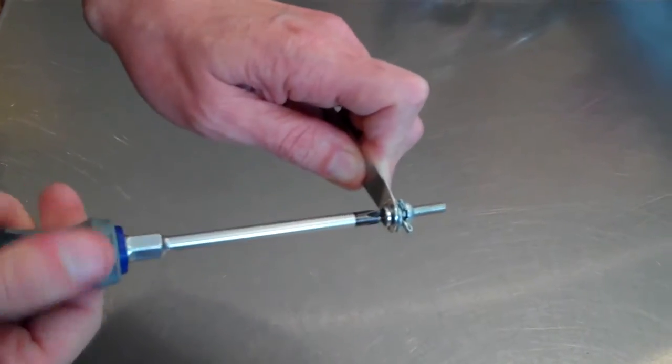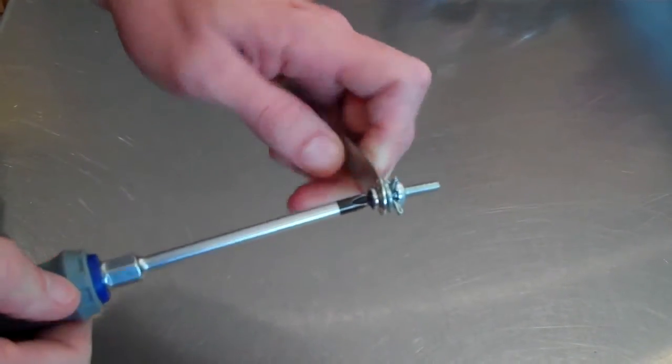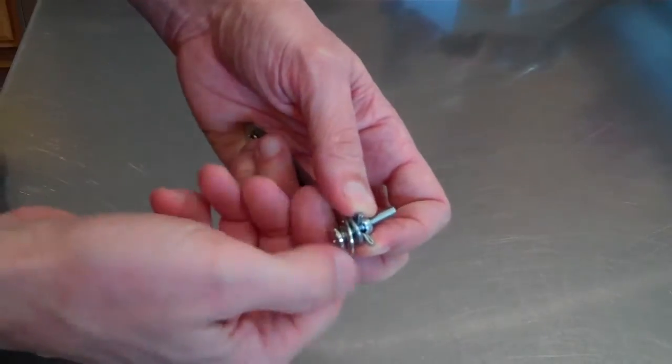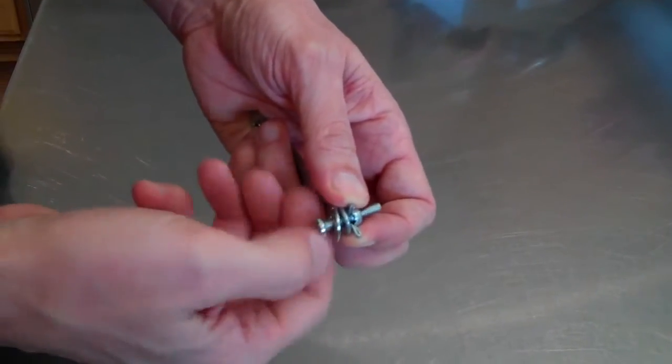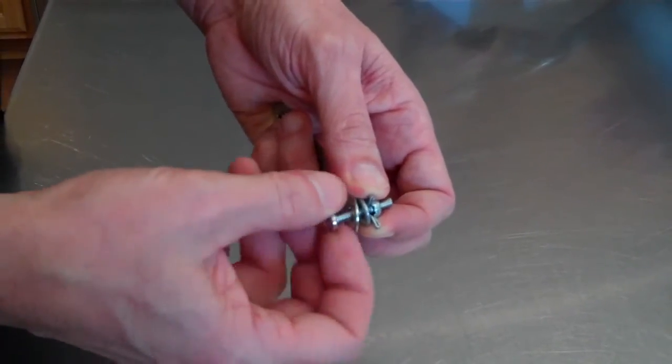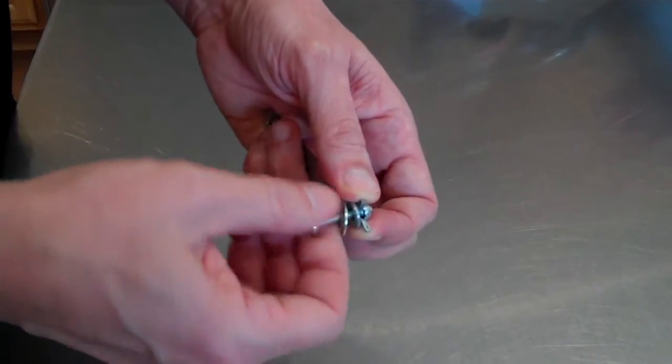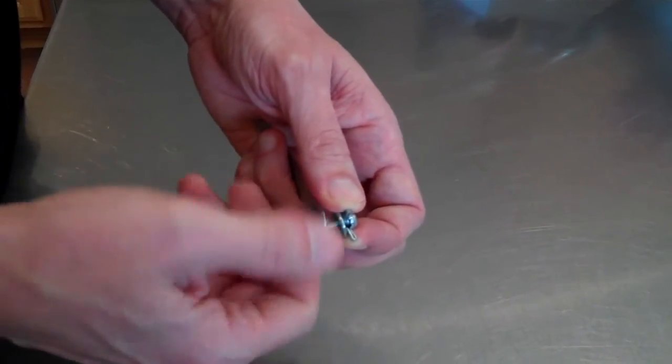Then back out the screw. At this point your jack nut will be sealed within your hole, whether it's metal or plastic.